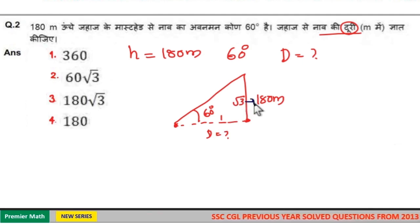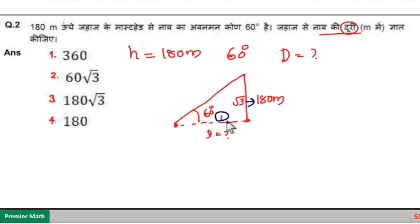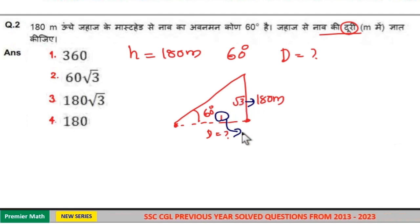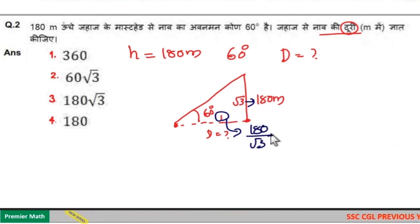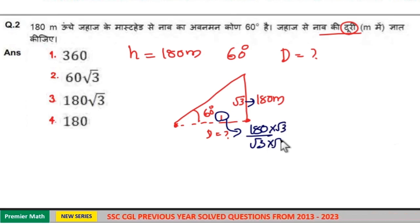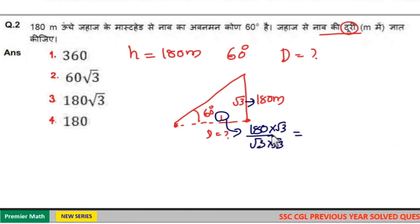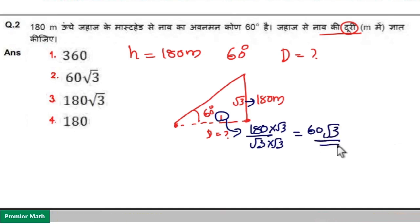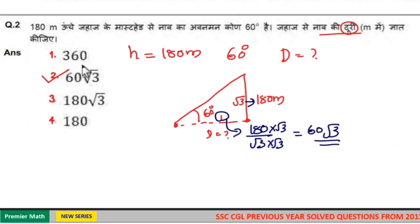Here the root 3 part is equal to 180 meters. Then we need one part, which is 180 divided by root 3. Multiplying numerator and denominator by root 3 gives 180 root 3 by 3. Since 3 goes 60 times into 180, the answer is 60 root 3. Option 2 is your answer.